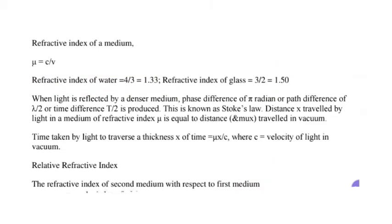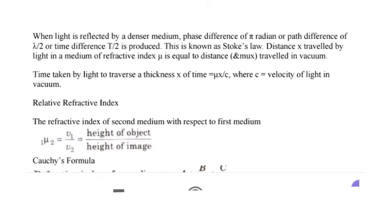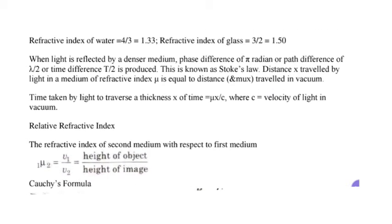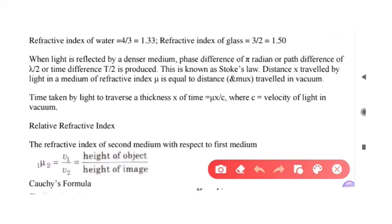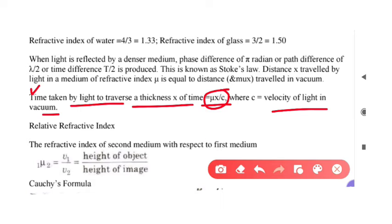Here is another important terminology: the time taken by light to travel through a medium of thickness x is given by the formula mu × x / c, where c is the velocity of light in vacuum. This formula tells us how much time light will take to pass through any given thickness of a medium.